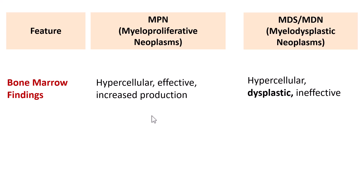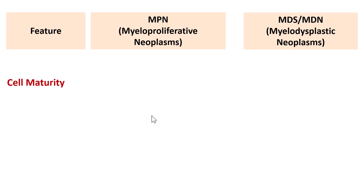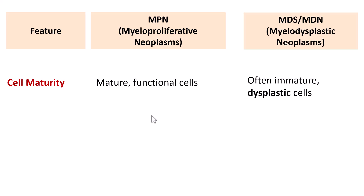In Myelodysplastic Neoplasms, the bone marrow is hypercellular but with ineffective hematopoiesis — the cells are dysplastic and die, so by the time they reach the peripheral smear, many cells have died, resulting in cytopenias. Regarding cell maturity, all cells in Myeloproliferative Neoplasms are mature and functional, whereas in Myelodysplastic Neoplasms, they are often immature or dysplastic cells.